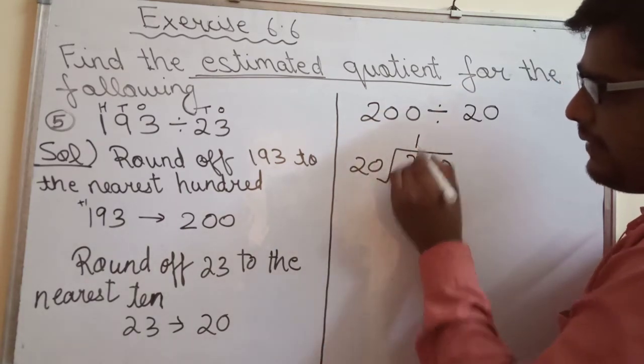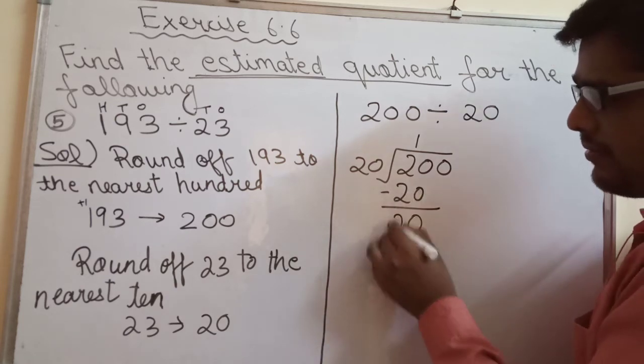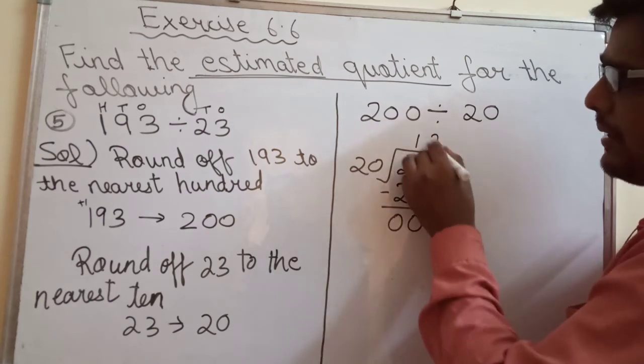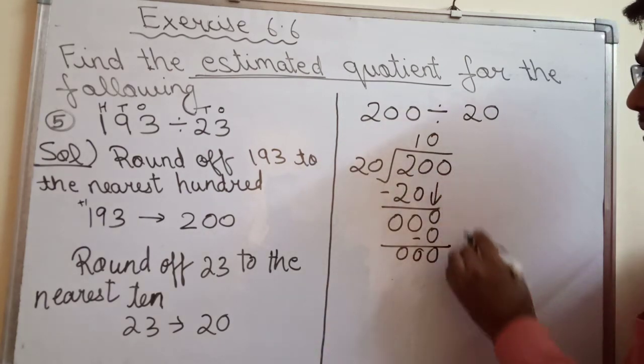Take two digits. 20 mein 20 goes one time. Put 1, 0. Take this 0 down. 20 mein 0 goes 0 times. Division is over.